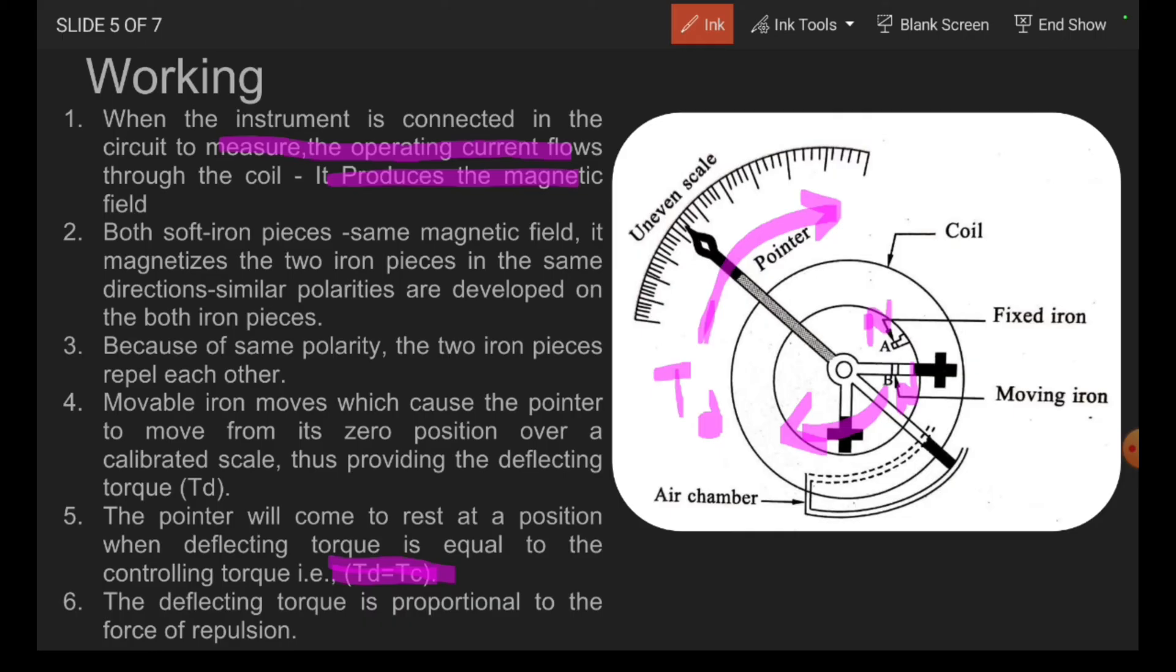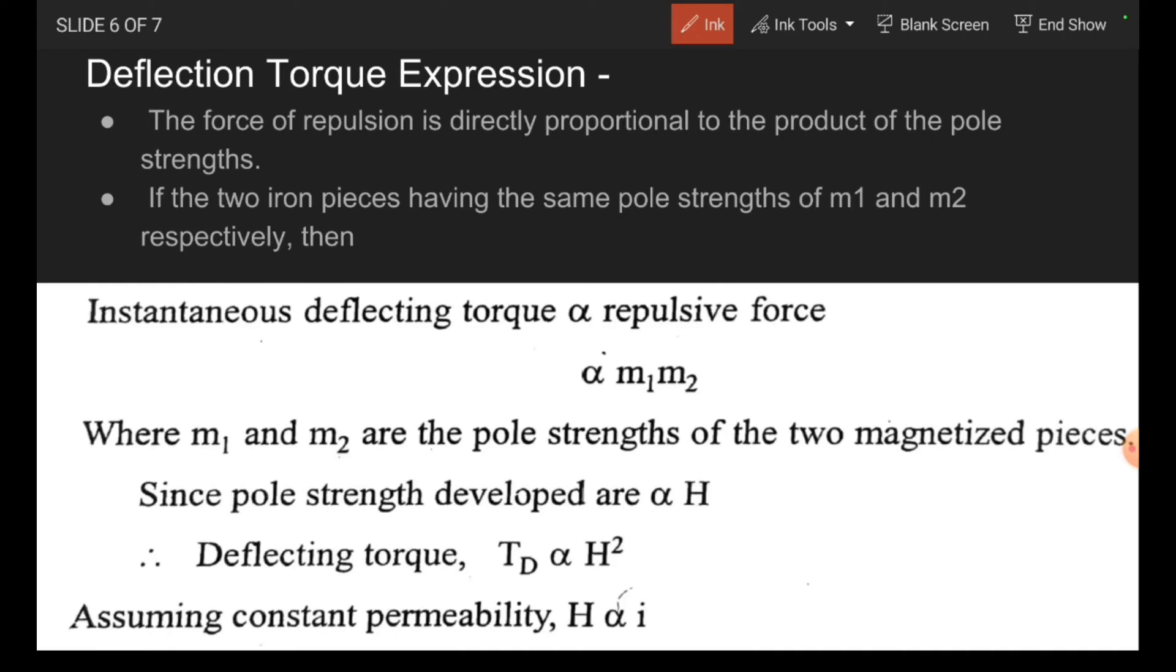The deflecting torque is provided to the force of repulsion. Therefore, the deflecting torque expression is, the force of repulsion is directly proportional to the product of the pole strengths. If the two iron pieces have the same polarity and of having the same pole strength of M1 and M2 respectively.